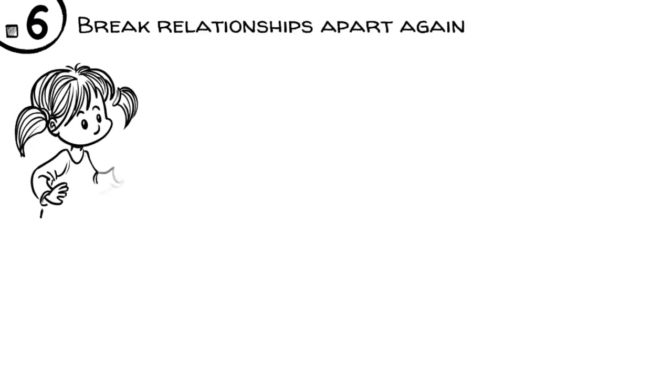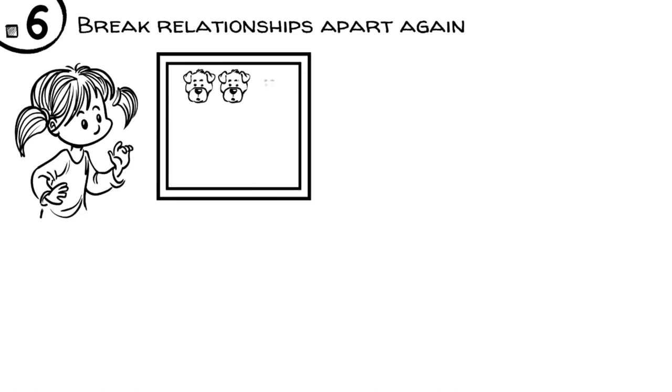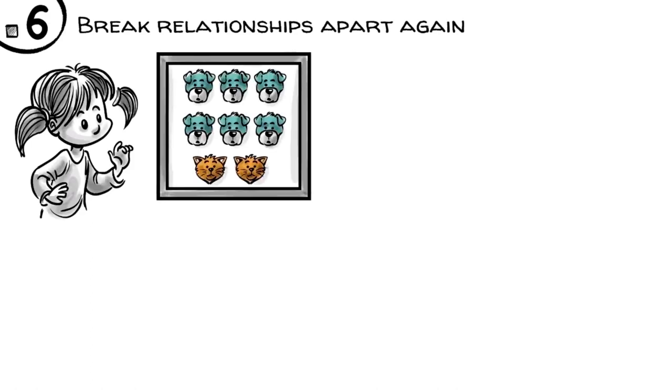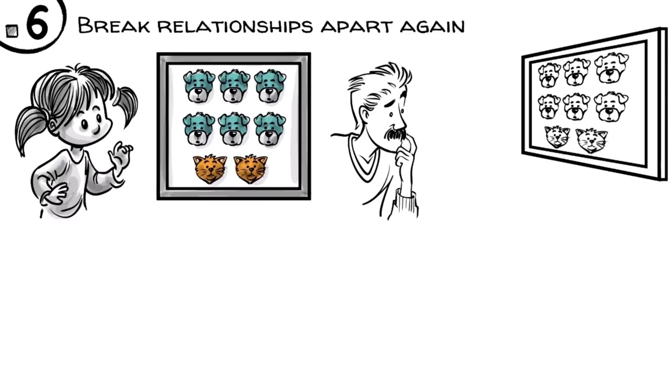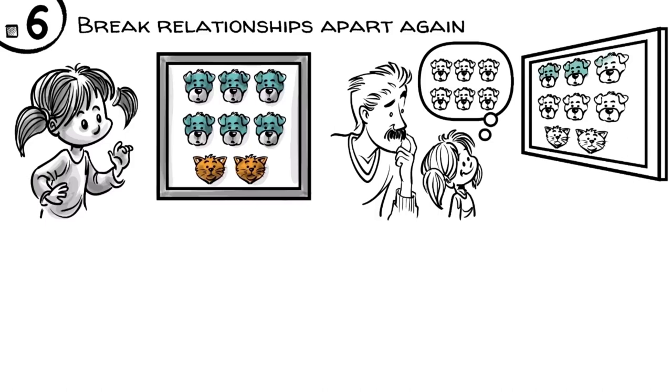We can see how hard this is when we present a five-year-old an image of six dogs and two cats, and then ask, are there more dogs or more animals? While most adults who see the full picture find this question odd, a five-year-old typically just answers, more dogs. When you ask further, more dogs than what, the child replies, then cats.